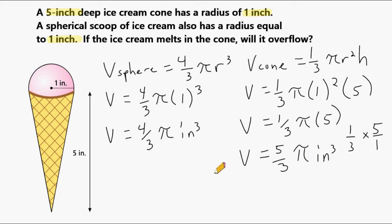Let's go ahead and compare the volume of the sphere versus the volume of the cone. We can see that the volume of the cone is larger than the volume of the sphere. The volume of the cone is 5/3 pi cubic inches and the volume of the sphere is 4/3 pi cubic inches. This is 1/3 pi cubic inches larger than this, if you were to subtract. So the volume of the cone is greater than the volume of the sphere, which means the volume of the cone is sufficient to hold the volume of the melted ice cream.